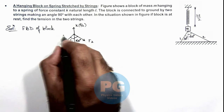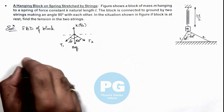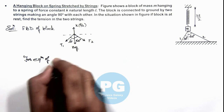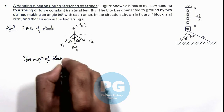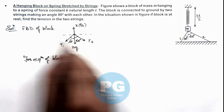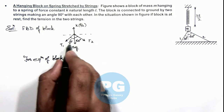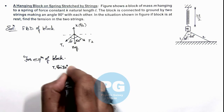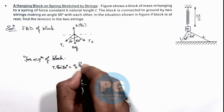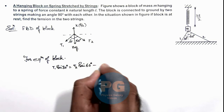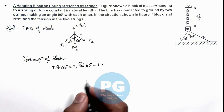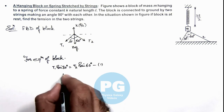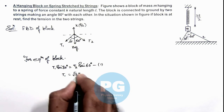Now, since the block is in equilibrium, we can write the equilibrium equations. Balancing forces in the horizontal direction: T1 sin30° = T2 sin60°, which is our first equation. Since sin30° = 1/2 and sin60° = √3/2, this gives us T1 = √3·T2.